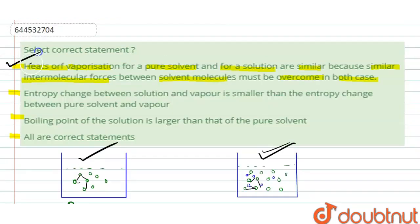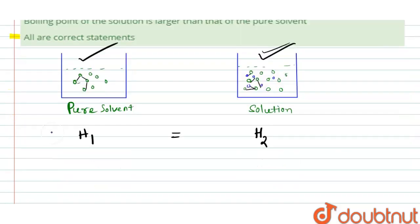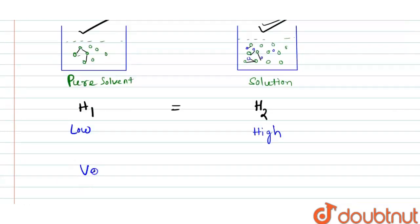In the second statement it is said: the entropy change between solution and vapor is smaller than the entropy change between pure solvent and vapor. We know the entropy of pure solvent is lower than that of solution, so the entropy of solution is higher. But in the vapor phase, entropy is the highest.